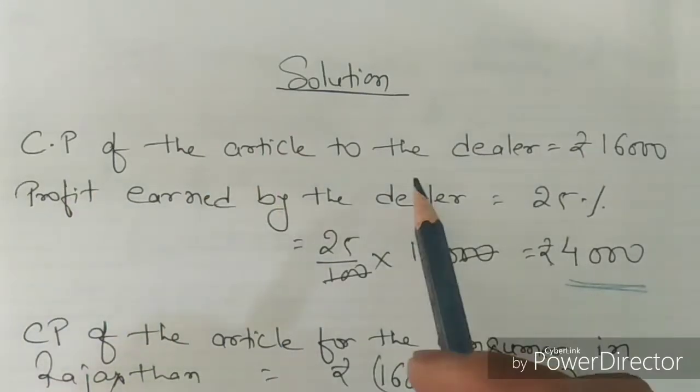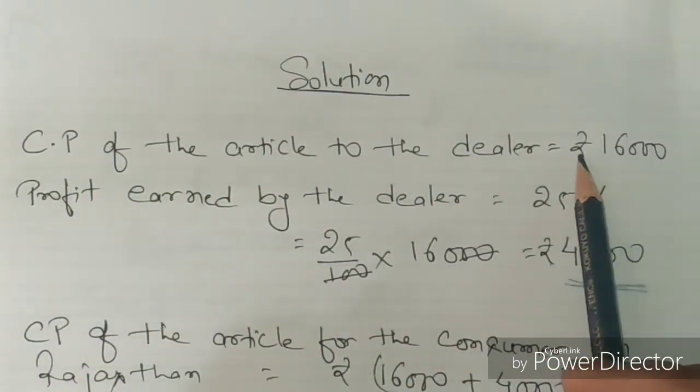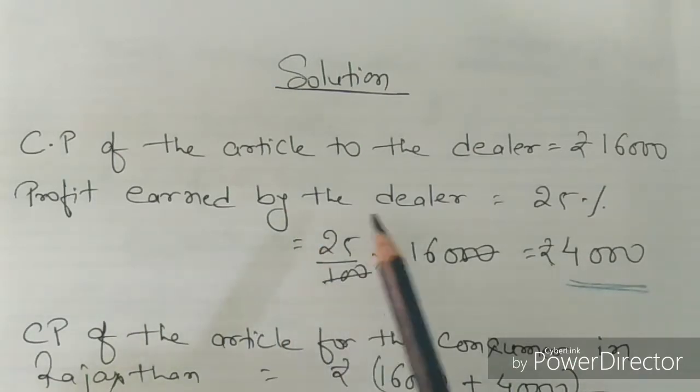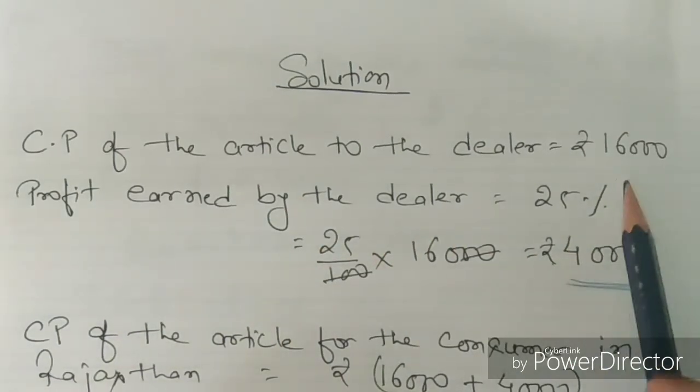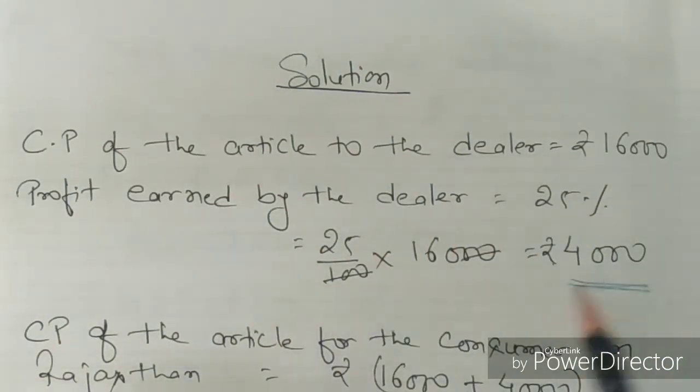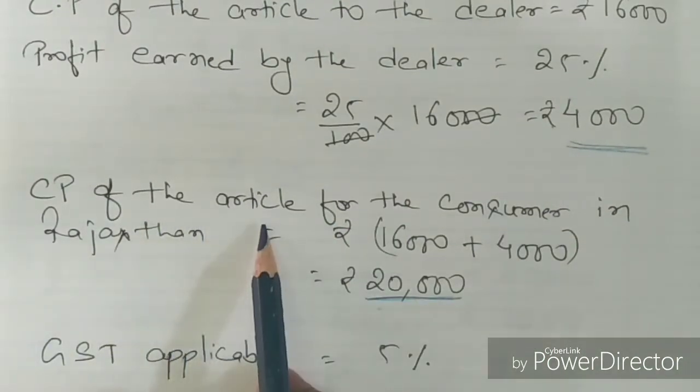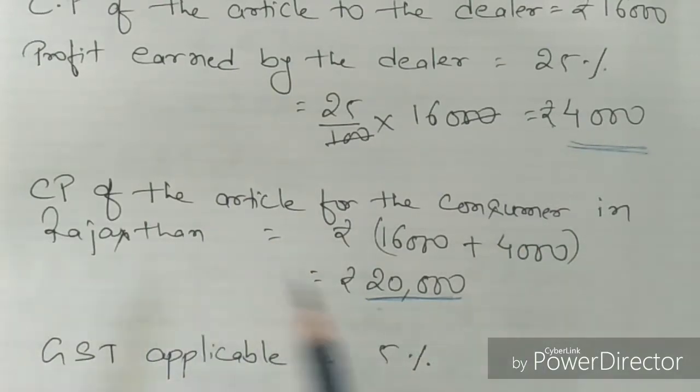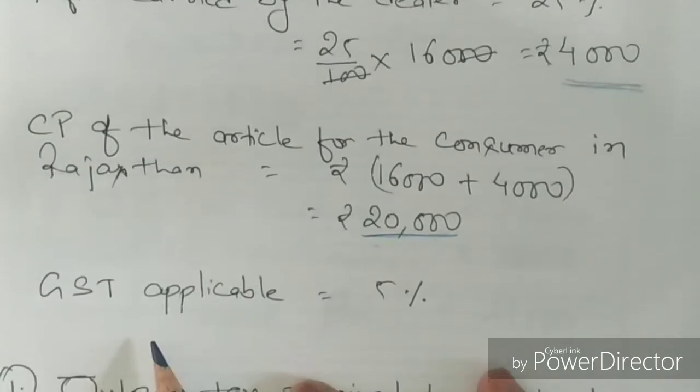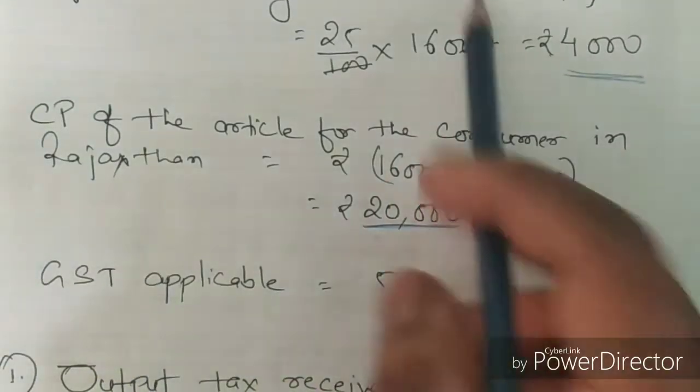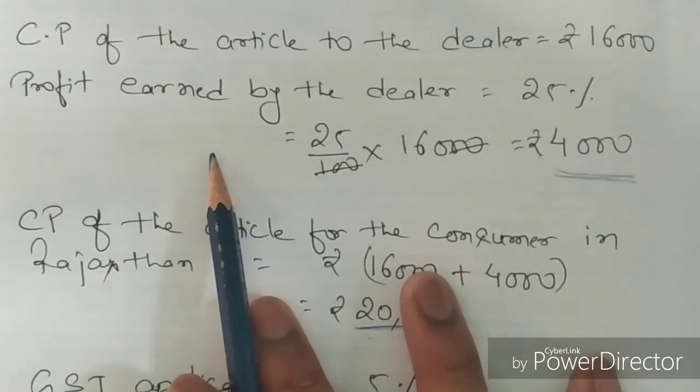The cost price of the article to the dealer is Rs 16,000 and the dealer earns a profit of 25% on Rs 16,000, which is Rs 4,000. So the cost price for the consumer in Rajasthan is Rs 20,000, and the GST applicable is 5%. This is our question.